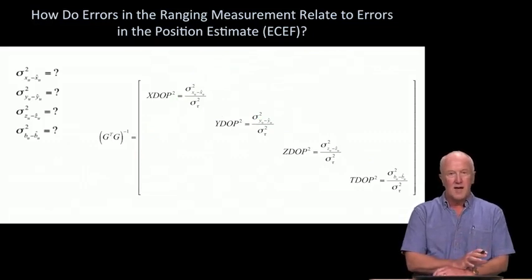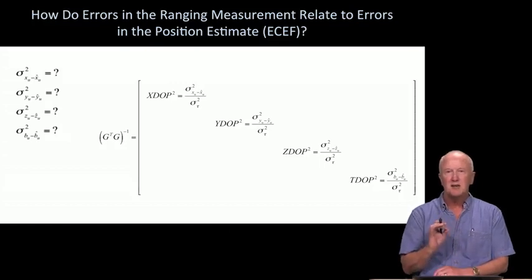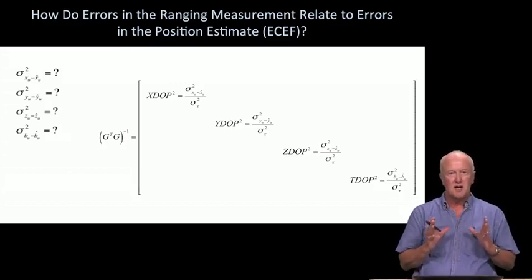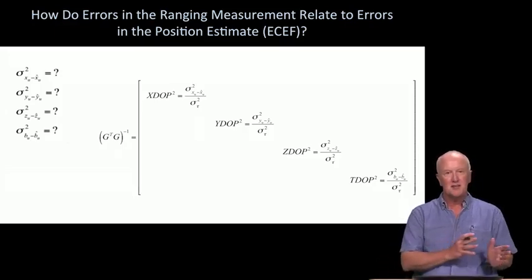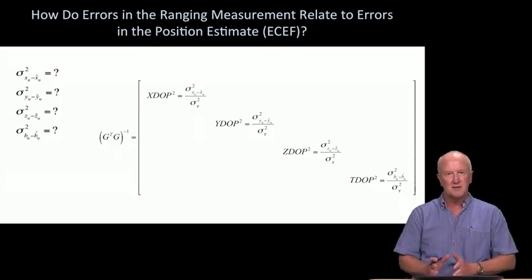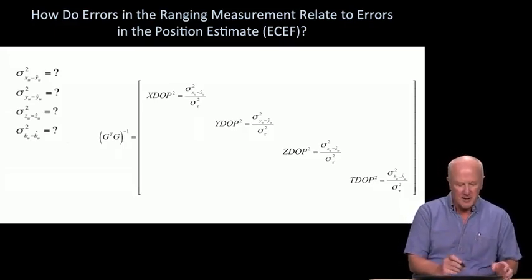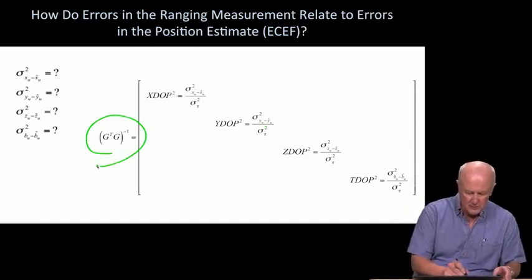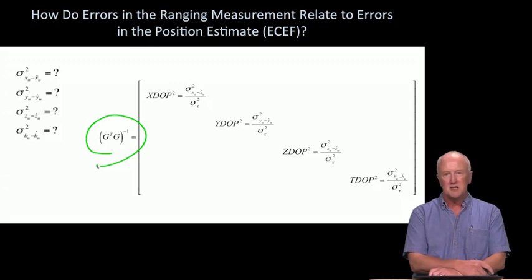That mapping is the dilution of precision, the DOP. And so please appreciate the value of both ends of this, the side which describes how good are the measurements, the dilution of precision, which you use to multiply times the sigma that describes the pseudorange measurement, and end up with an estimate of the standard deviation of the error in east, the error in north, the error in up, and the error in the clock offset. Fortunately, that mapping with certain assumptions and certain approximations is entirely given by that G matrix that we talked about earlier.